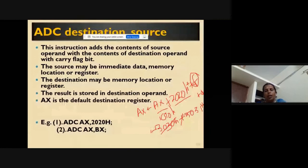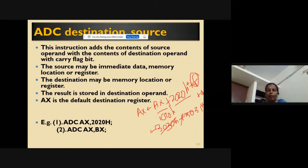To summarize ADC: the operation is source operand plus destination operand plus carry flag bit. If the carry flag bit is 0, the result is simply source plus destination stored in the destination. If the carry flag is 1, one more is added to the result before storing.